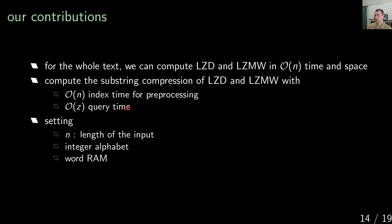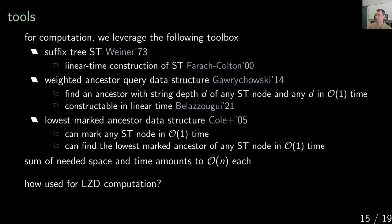The tools we use are the suffix tree with a weighted ancestor query data structure: given any node, query an ancestor whose string depth is a value d, where string depth d means the number of letters read from root to that node is exactly d. We also need a lowest marked ancestor data structure, where you can mark any suffix tree node and then retrieve the lowest marked ancestor of any given node. All these queries can be answered in constant time, and all data structures can be built in linear time.